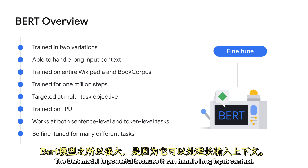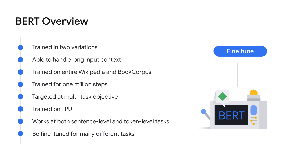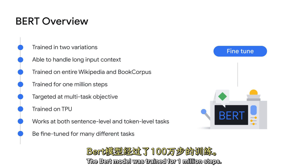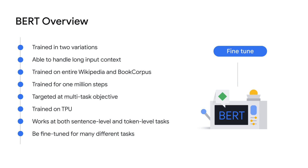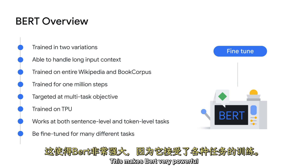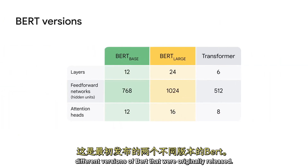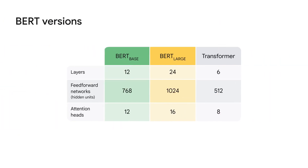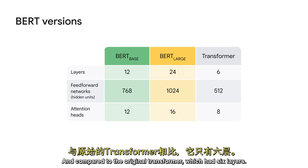The BERT model is powerful because it can handle long input context. It was trained on the entire Wikipedia corpus and books corpus. The BERT model was trained for 1 million steps. BERT is trained on different tasks, which means it has a multi-task objective — this makes BERT very powerful. Because of the kind of tasks it was trained on, it works at both a sentence level and at a token level. BERT base had 12 layers, whereas BERT large had 24 layers, compared to the original transformer which had six layers.